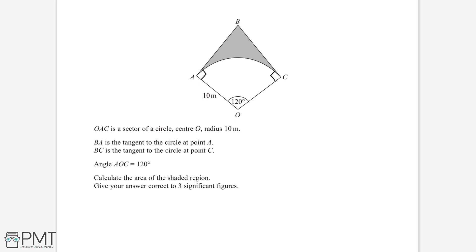We can see we have a kite shape here. Kites are quadrilaterals, and all angles in a quadrilateral sum to 360 degrees. So angle ABC is equal to 360 minus 90 minus 90 minus 120, which gives us 60 degrees. We can mark this onto our diagram.